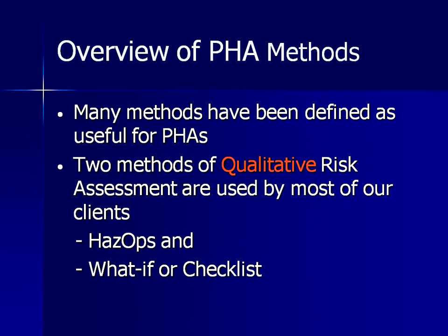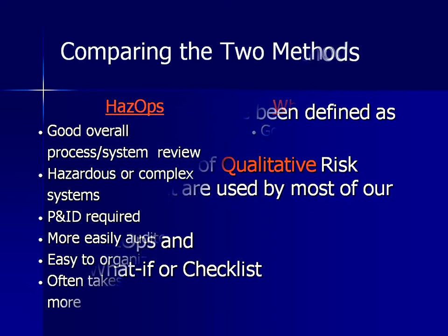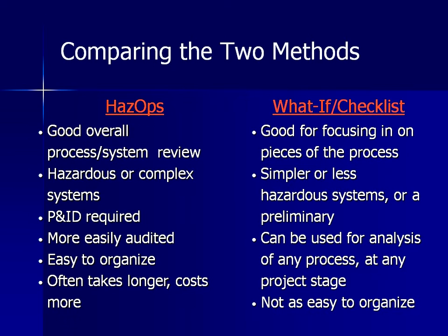Two qualitative risk analysis methods are used by most of our clients: HAZOP or WHAT IF. A HAZOP is a more comprehensive review of a complex P&ID system, which is easy to organize and document. The WHAT IF technique is preferred for simpler or more focused systems.